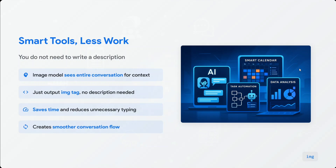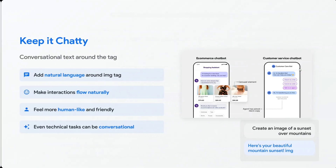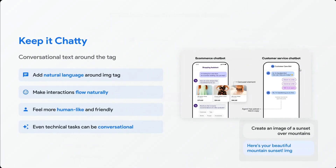Smart tools, less work — you don't need to write a description. Most models are doing everything asked, but this model is specifically designed to just create images. It uses the entire conversation for context, then just outputs the image tag — no description needed. This saves time, reduces unnecessary typing, and creates a smoother conversational flow. Keep it chatty — add natural language around the image tag to make interactions feel more human-like and friendly.